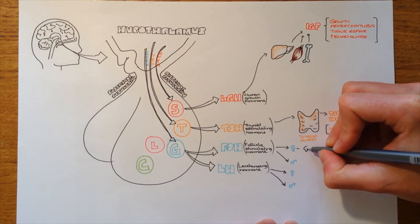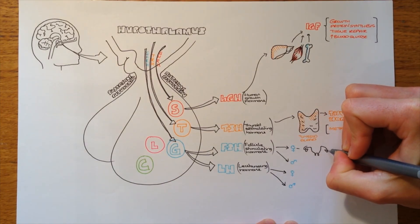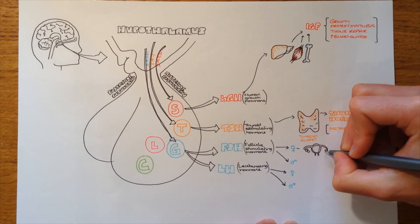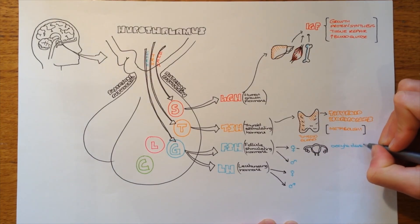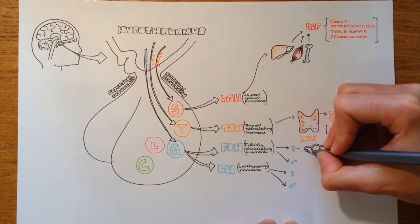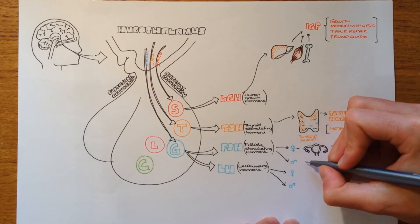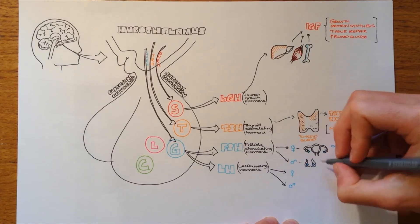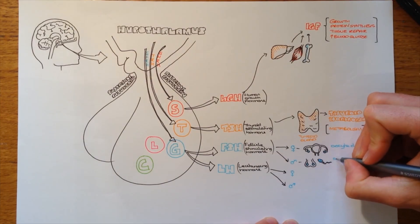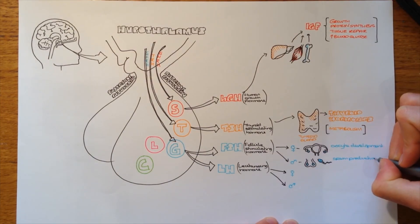So follicle stimulating hormone, in women, it triggers the development of the oocytes. So that's a pretty sketchy looking diagram of a uterus with fallopian tubes and ovaries. And in men, it triggers the testes, see here are the balls again, to produce sperm. It does look a bit like the pituitary, come on.